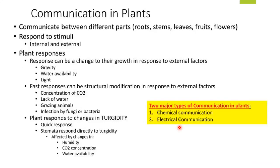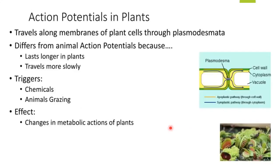First, let's talk about electrical communication, and in this topic we'll take the example of Venus fly traps as in our course. Since we're talking about electrical communication, let's discuss action potentials. Plants do not have any neurons or nerve cells like animal cells, but action potentials do still take place.